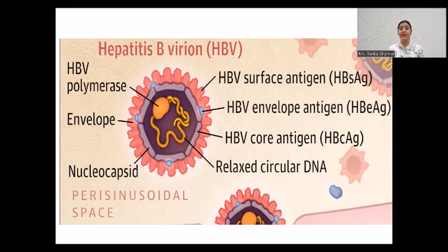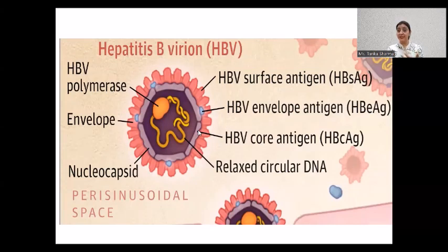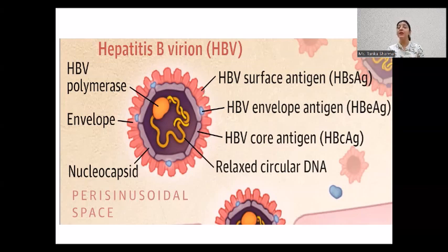You should know about three antigens present on the Hepatitis B virus. They are the core antigen, the envelope antigen, and the surface antigen. The core antigen is HBc antigen — HBV core antigen. Outside that core is the HBe antigen, meaning Hepatitis B envelope antigen. And the one present on the surface is HBs antigen, that is Hepatitis B surface antigen. This is important for diagnosing a patient with Hepatitis B infection.